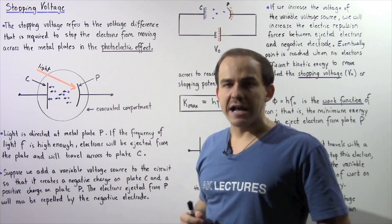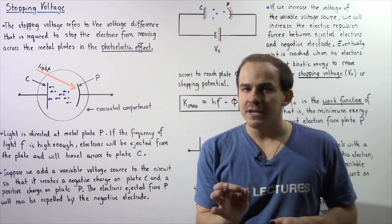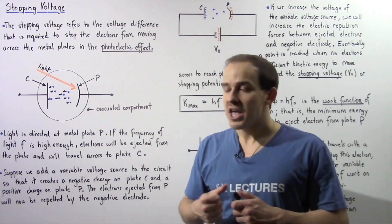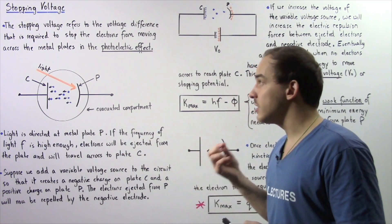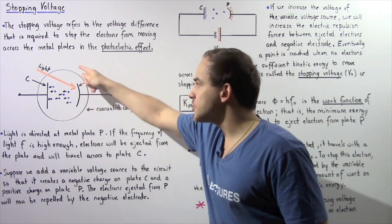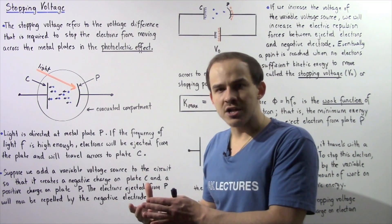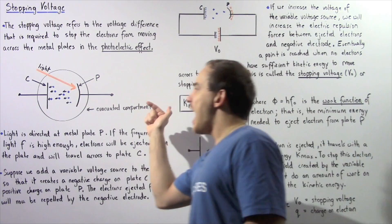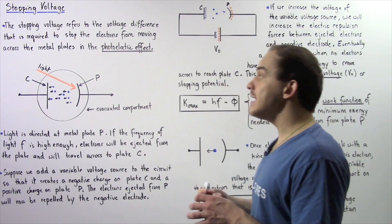Now, on the surface of that plate, we have electrons. And if the frequency of light is high enough, those photons inside the light will have a high enough energy to eject the electrons found on the surface of plate P. And those ejected electrons will carry a certain quantity of kinetic energy and will travel across from plate P to metal plate C.